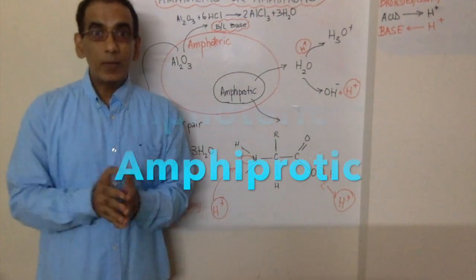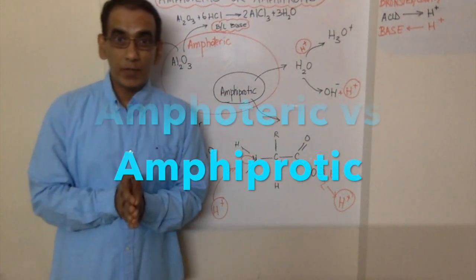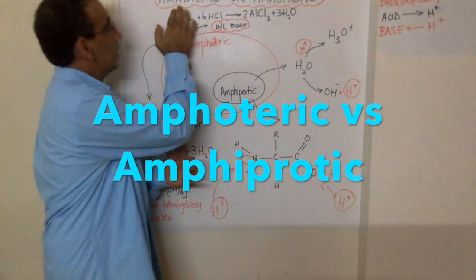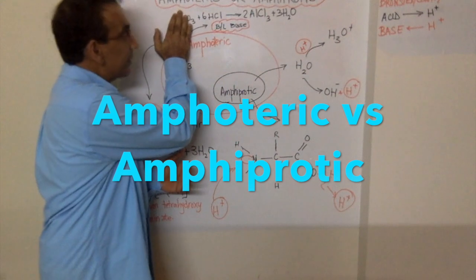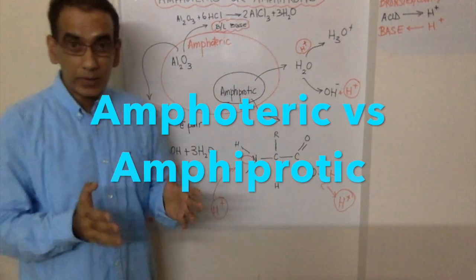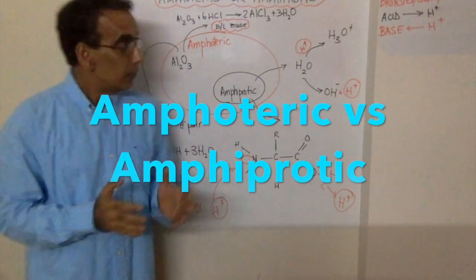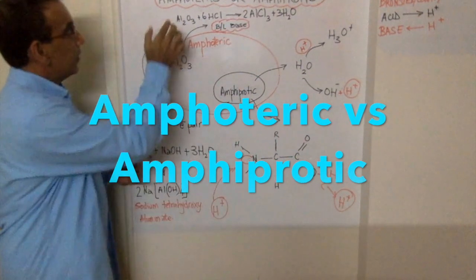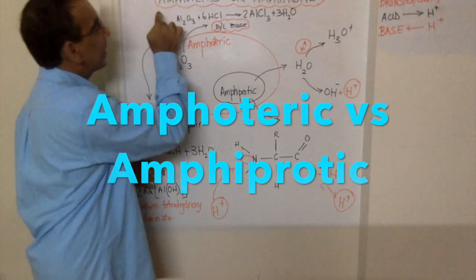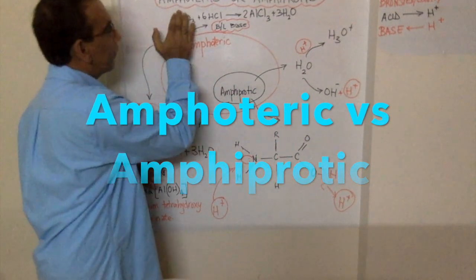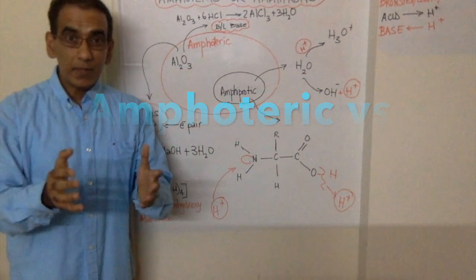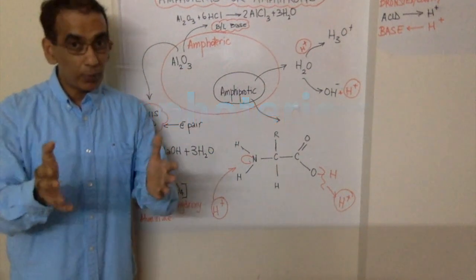Welcome again. Today we look at the difference between these two terms, amphoteric and amphiprotic. Notice that they both begin with the prefix 'amph', which means having a bit of both.